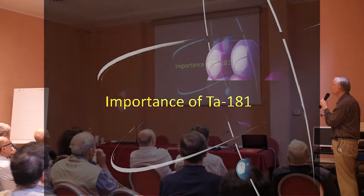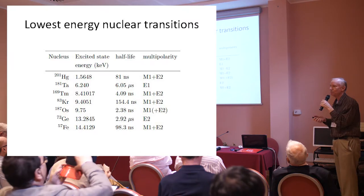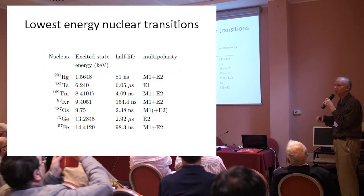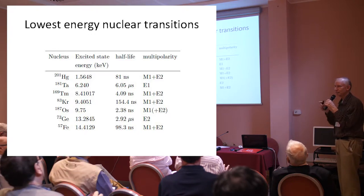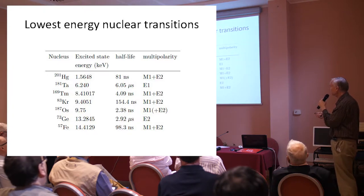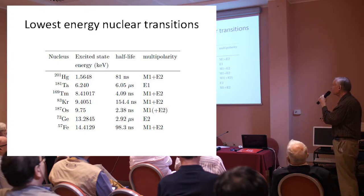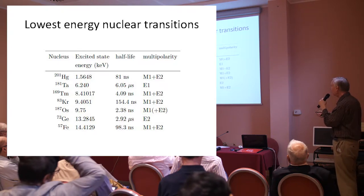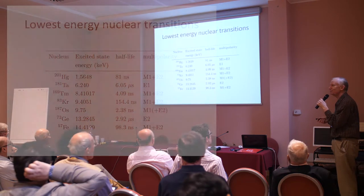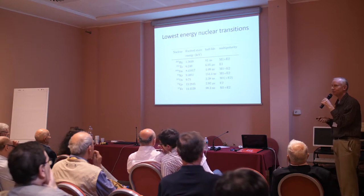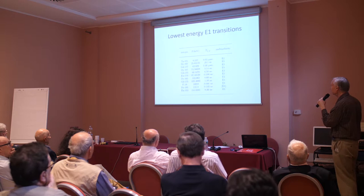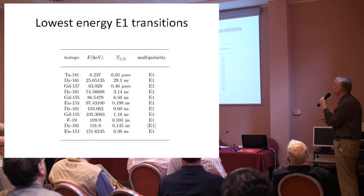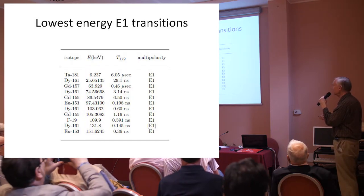Given this interaction, Tantalum-181 is important. In my models, I'm interested in excitation from ground states to low-lying nuclear states, basically because the lower the energy, the bigger the effect you can get in the models. Here are some of the lowest nuclear excited states — Mercury-201 is the lowest, Tantalum-181 is the second lowest. The multipolarity is E1, which is electric dipole multipolarity, and the interaction we're dealing with is electric dipole multipolarity. So this transition is the special one in this theory. Looking at the lowest energy E1 transitions for stable nuclei, Tantalum is basically singular, which is why my interest is focused on it.